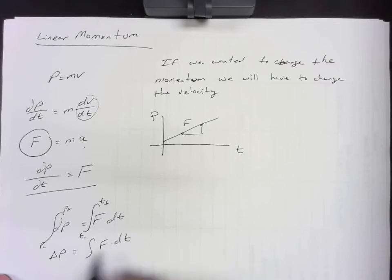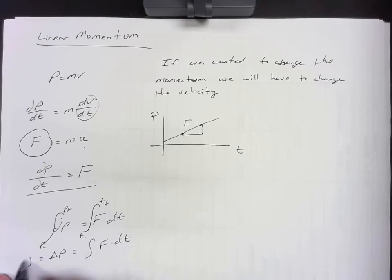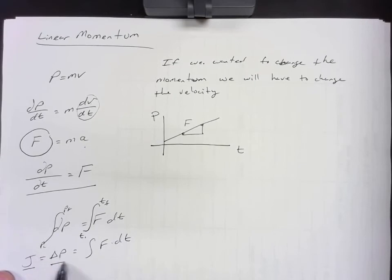The change in momentum is given by the impulse. So that change in momentum is impulse. J stands for impulse.